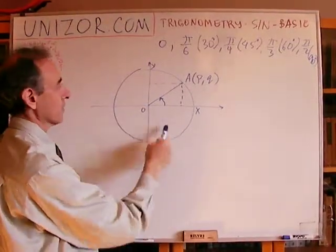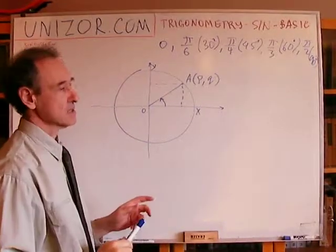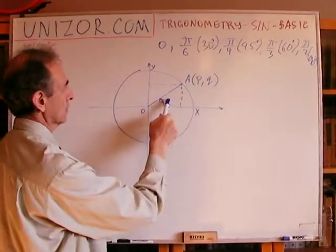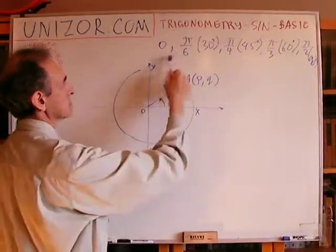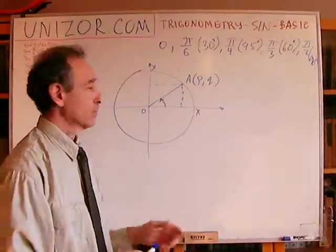We are concentrating only on these values of angle, which are in the first quadrant of the coordinate plane. We will talk about other angles a little later. So, in this case, the angle XOA is one of these. So let's just calculate what is the sine for each case.